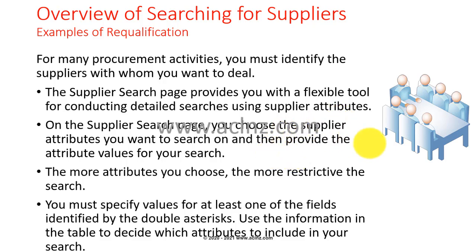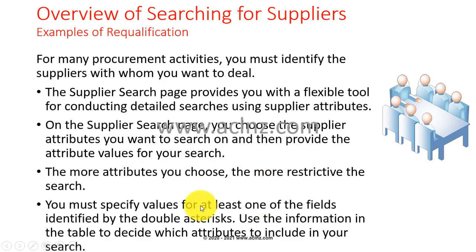On the supplier search page, you choose the supplier attribute you wish to search for and then provide the attribute values. The more attributes you choose, the more restrictive the search will be. You must specify values for at least one of the fields identified by double asterisks, and you use the information in the table to decide which attributes to include in your search.